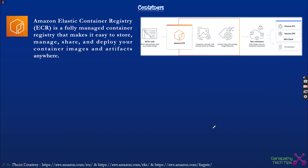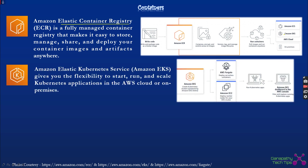The Elastic Container Registry (ECR) is a repository for container images. All Docker or other container images are stored in ECR. It is essentially AWS's equivalent of Docker Hub — you push your Docker images to ECR, it handles versioning, and you can pull images from ECR to deploy and orchestrate using EKS or ECS.